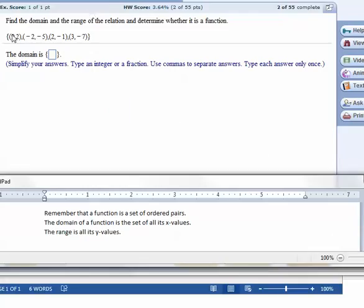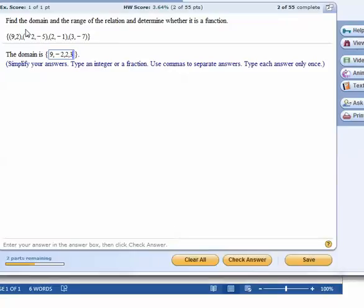Remember that a function is a set of ordered pairs. The domain of a function is the set of all its x values, so 9, negative 2, 2, and 3.